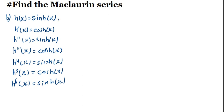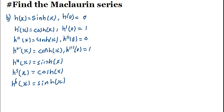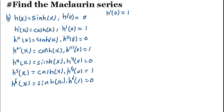When we evaluate at zero: H of zero equals zero, H prime of zero equals one, H double-prime of zero equals zero, H triple-prime of zero equals one. The pattern continues — zero, then one, and so on. The first derivative gives one, the third derivative gives one, and the fifth derivative also gives one.